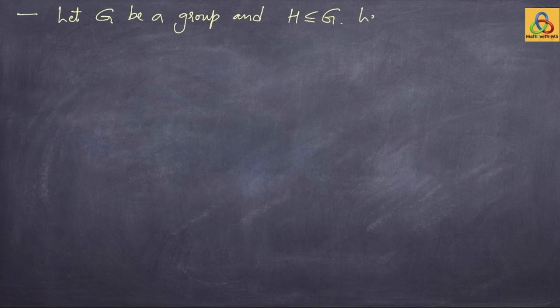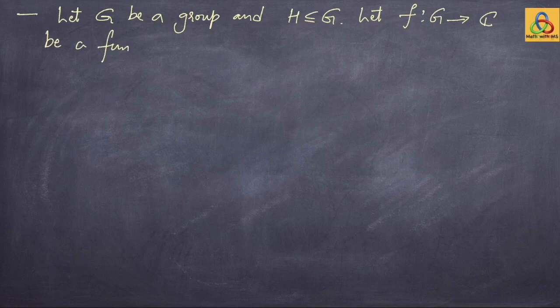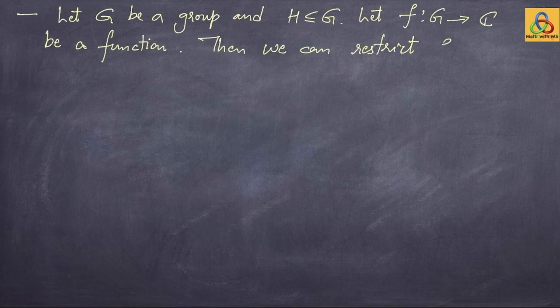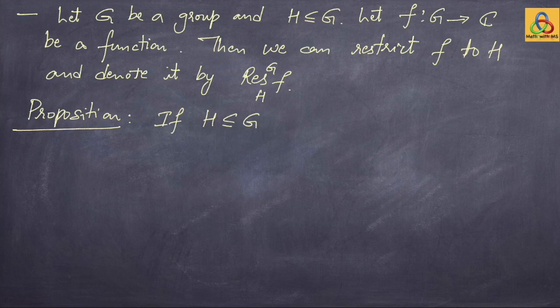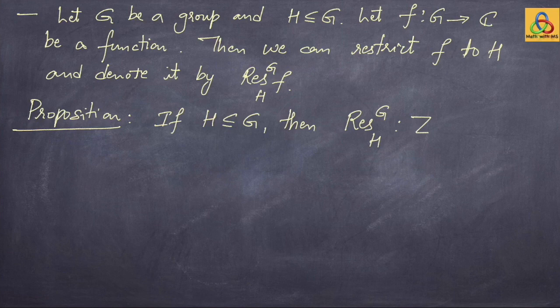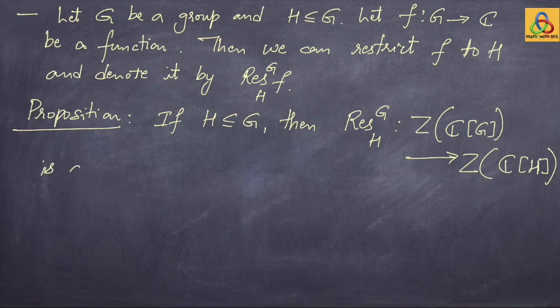Let G be a group and H a subgroup of G. Let f from G to C be a function, not necessarily class-preserving. We can restrict this f to H and denote it by the restriction map. A key elementary observation: the restriction map from the center of the group algebra C[G] to the center of the group algebra C[H] is a C-linear map.